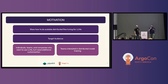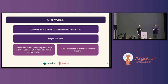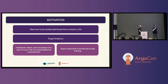So the motivation: we wanted to show in this talk how to do scalable distributed fine-tuning for LLMs. The target audience is really individuals, teams, and companies who want to use LLMs but need to do some additional customization — like, for example, customizing an LLM to represent a certain tone of voice, maybe Alan Arkin from the 2012 movie Argo, or Christopher Walken. Also, if you're interested in distributed model training generally, you're going to get a lot out of this talk.